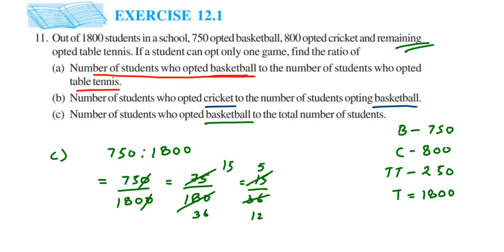So you got 5 by 12. We cannot cancel this further, so the ratio will become 5 is to 12. That's it. So I hope this question is clear. In case you have any other question or doubt, you can drop a comment. Thank you so much for watching.